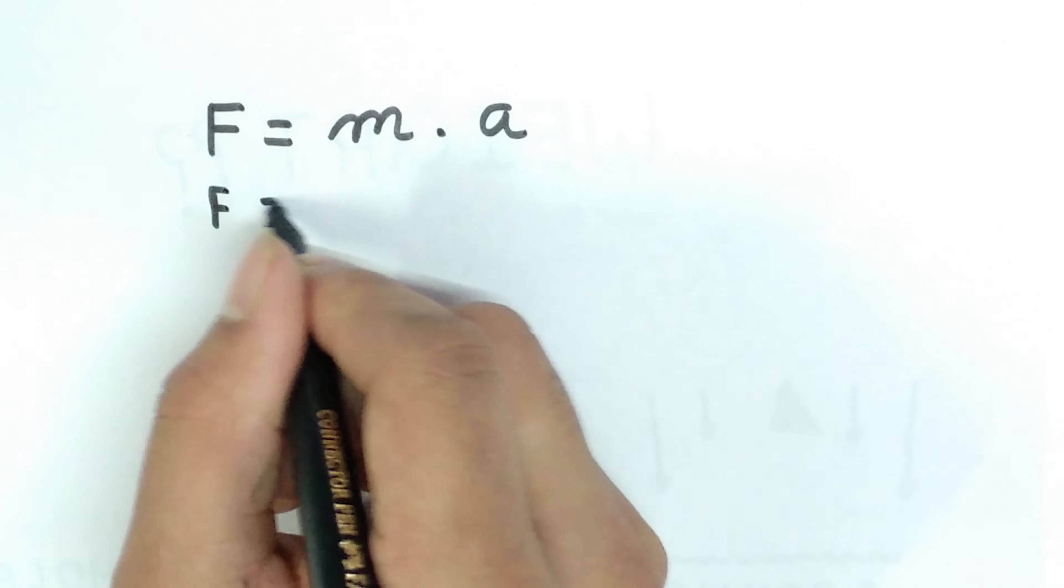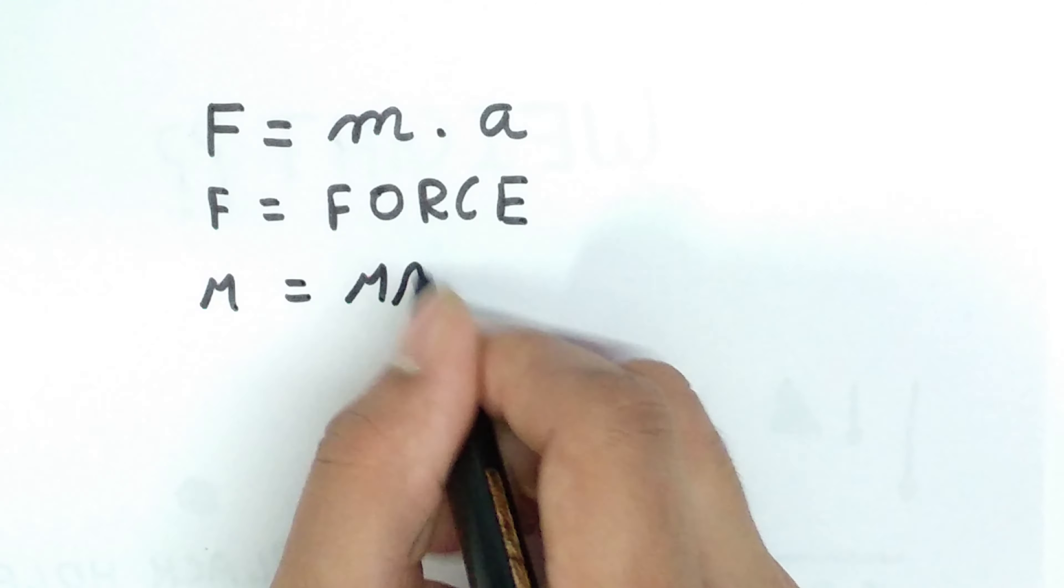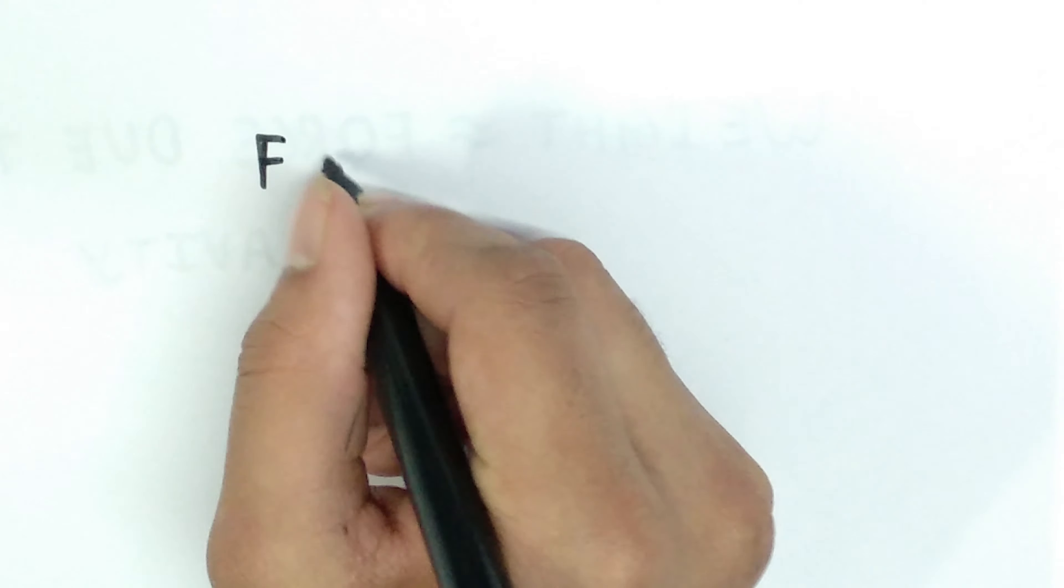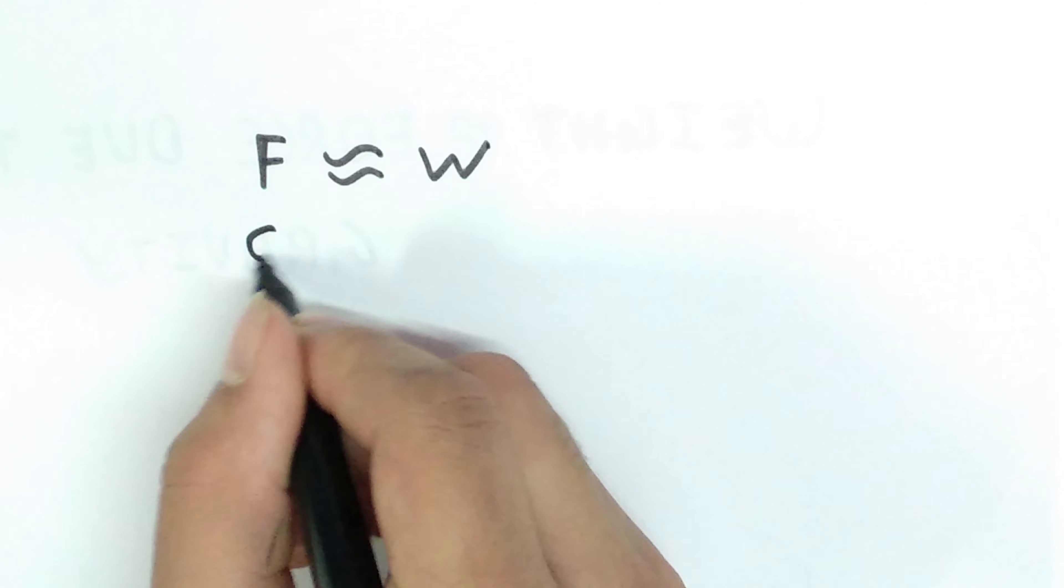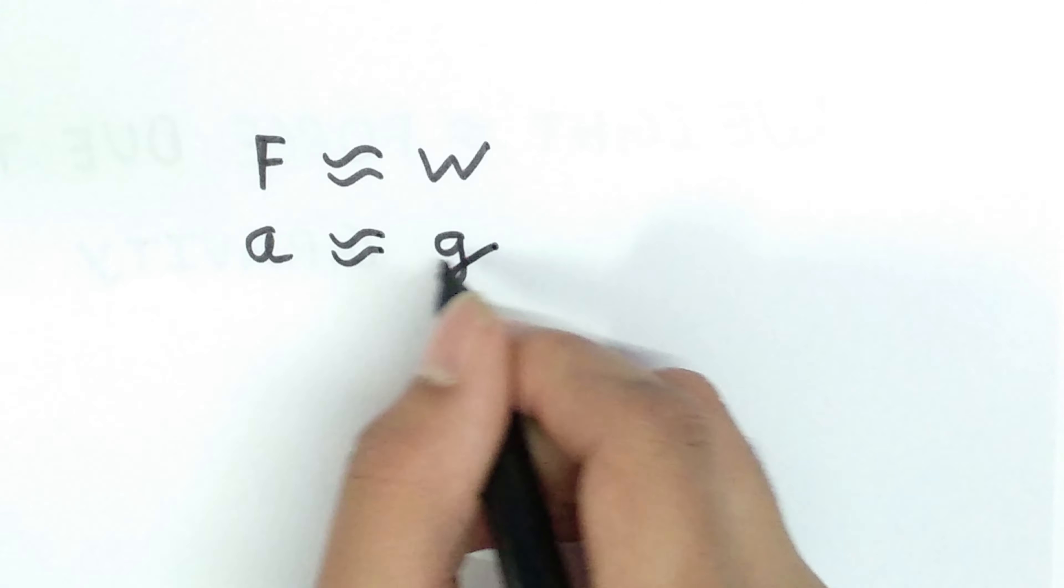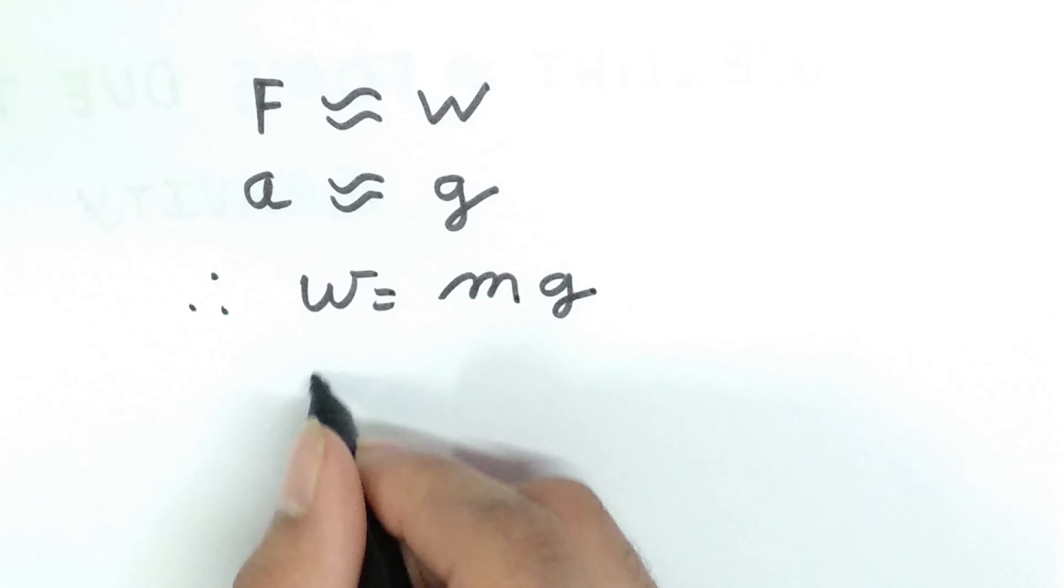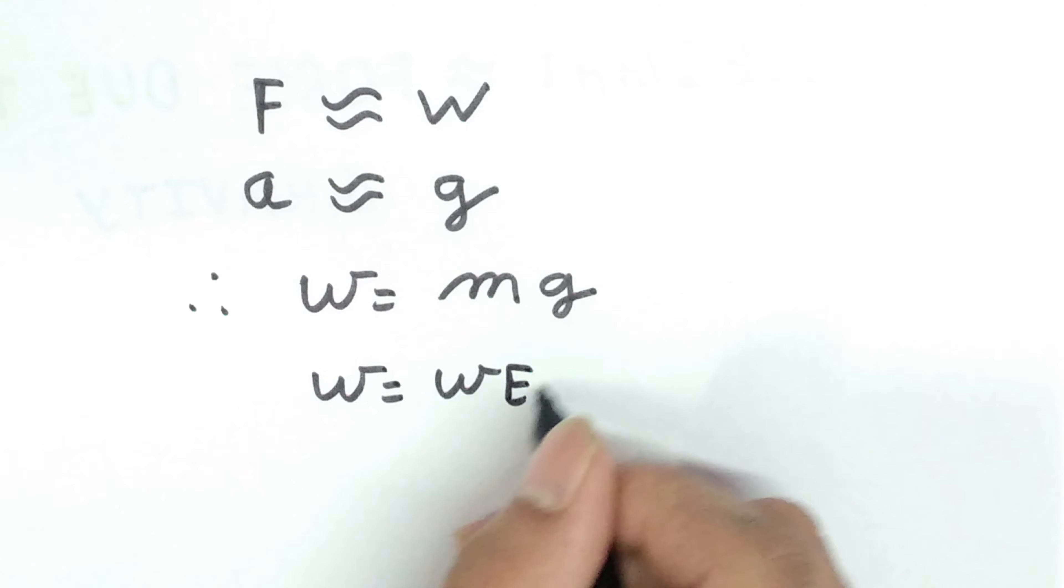We know that F equals to MA where F is force, M is mass and A is acceleration. F can be replaced by W and A can be replaced by G. Therefore, W equals to MG where W is weight, M is mass and G is gravitational acceleration.